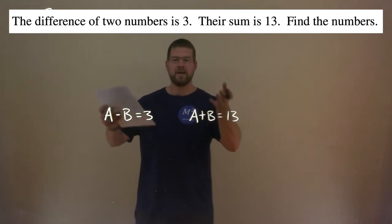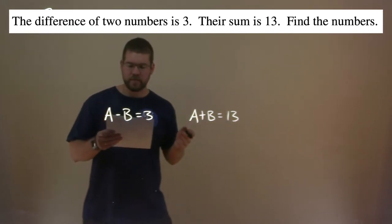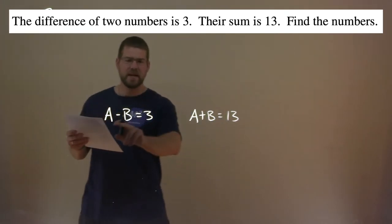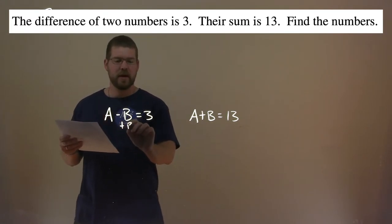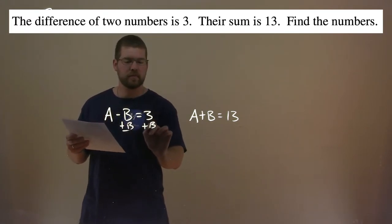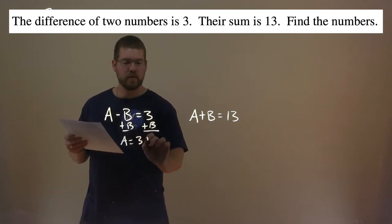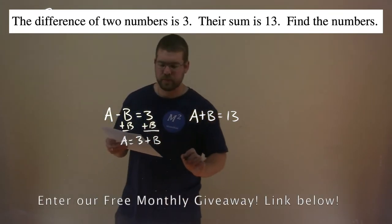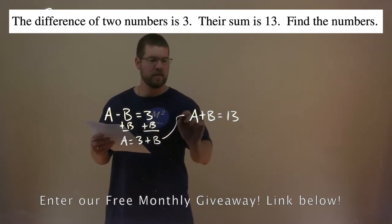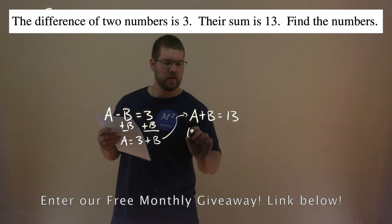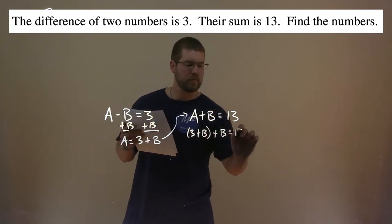We now have two equations to work with. We're going to take A minus B and try to get A by itself. Add B to both sides, and A equals 3 plus B. With that, we're going to substitute this value for A: 3 plus B plus B equals 13.